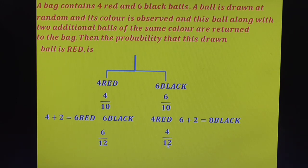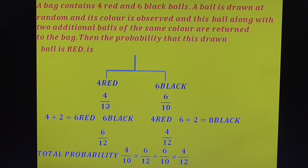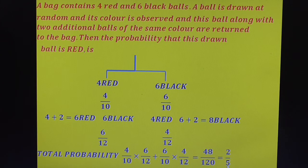Now simply apply the total probability condition. Multiply the two cases and add them: P(red first) × P(red second | red first) + P(black first) × P(red second | black first). That gives 4/10 × 6/12 plus 6/10 × 4/12, which is 24 by 120 plus 24 by 120, giving 48 by 120. That simplifies to 2 by 5. Your final answer is 2 by 5.